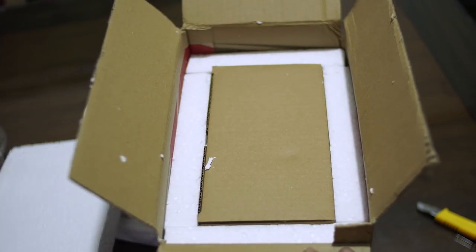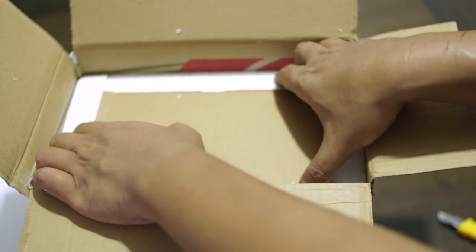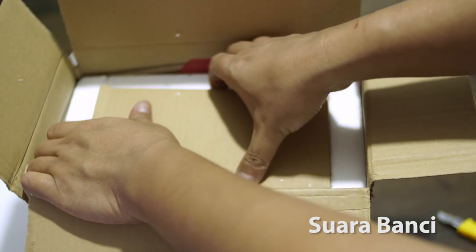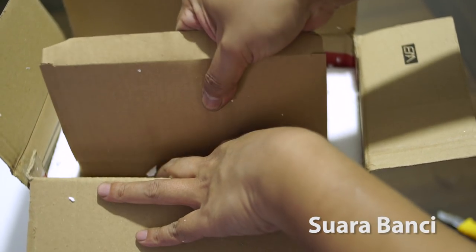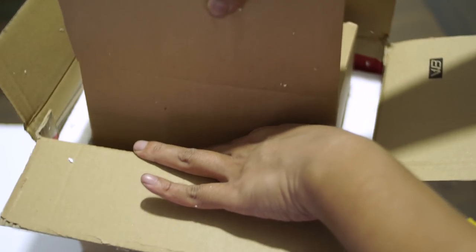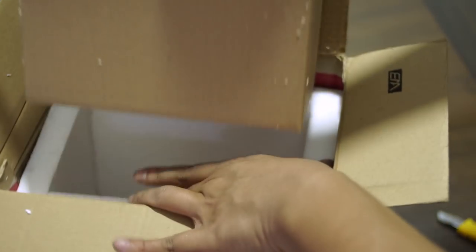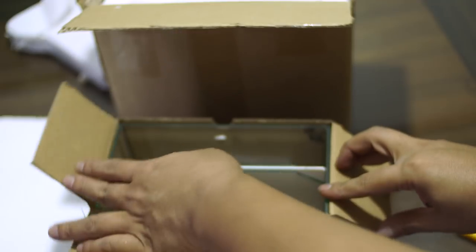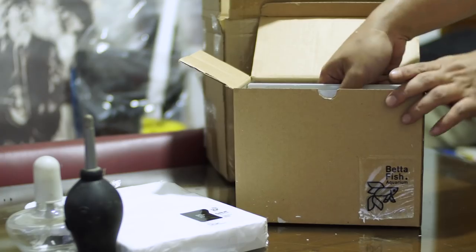Pada awal pembicaraan Betta Fish Aquarium dan Betasian, terus terang gue rada-rada ragu bahwa barang ini akan sampai ke gue dengan selamat, karena pada dasarnya semua terbuat dari kaca. Tapi seperti yang kalian lihat sendiri di unboxing ini, bungkusnya itu luar biasa ketat dan rapi.